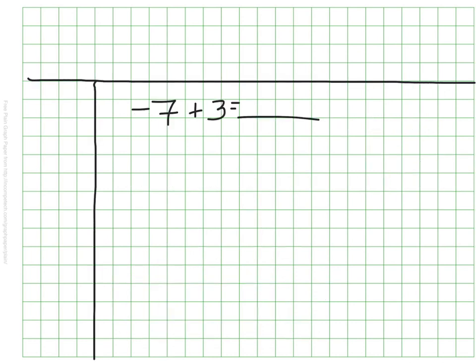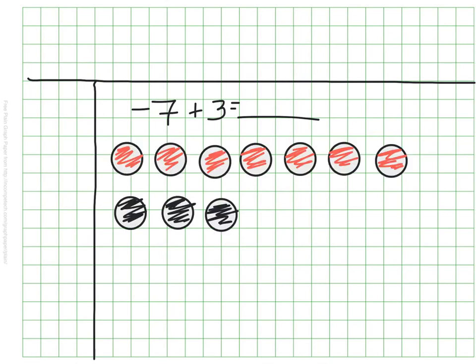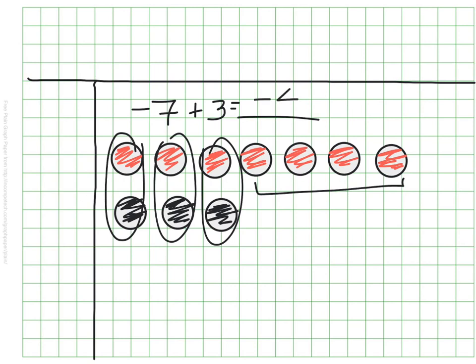Let's do another. This time let's do negative 7 plus 3. I'm going to make my model and then I'm going to look for zero pairs. Go ahead and make your model as well. Okay, so the way I've lined it up, it's pretty clear to me here that I have one, two, three zero pairs, which leaves me with all of this behind. I have four red chips left, and they're red, that means they're negative. So that means negative 7 plus 3 is a negative 4.